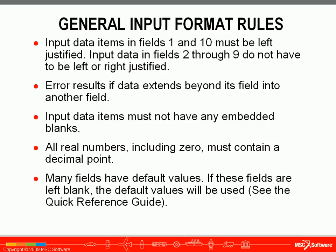Here are some general input format rules. Input data in fields 1 and 10 — the first and last fields on a small field format line — must be left justified. Data in fields 2 through 9 don't have to be left or right justified, but errors result if data extends beyond its field into another field. Input data items must not have any embedded blanks; you can have spaces before or after your data, but not in the middle. All real numbers, including 0, must contain a decimal point to indicate to NASTRAN that they're real numbers and not integers. Many fields have default values, and if left blank, the defaults will be used — these are available in the quick reference guide.